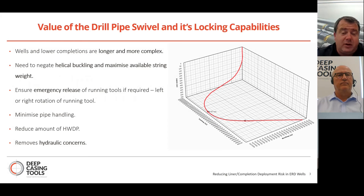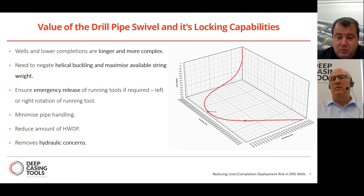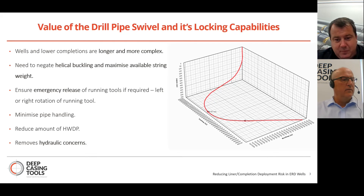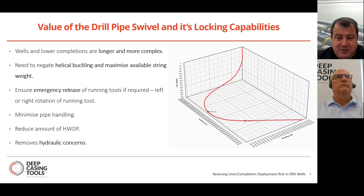The risks we're looking to overcome with the MechLock include high drag. Wells are getting longer and more complex. In many fields, especially here in the North Sea out of Aberdeen, the market is very mature — all the so-called easy oil has gone. Well paths now involve a lot of anti-collision with existing wells. If you're running in this type of well and you need to emergently release the running tools, preferably mechanically, doing it hydraulically introduces risks like swabbing, surging formations, and resetting hangers or packers.